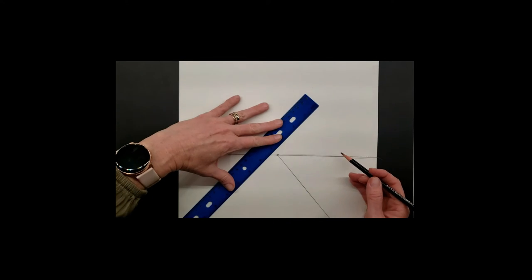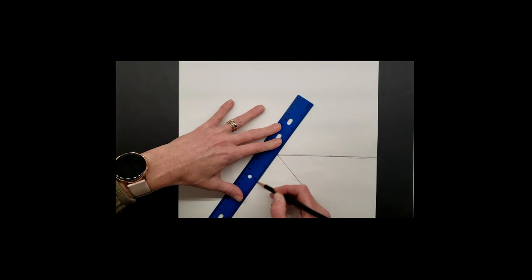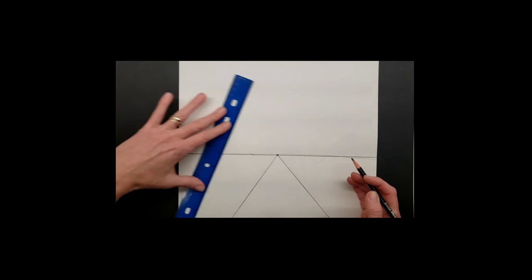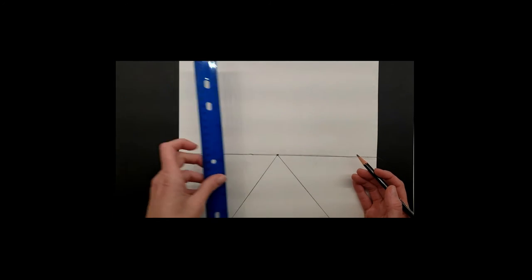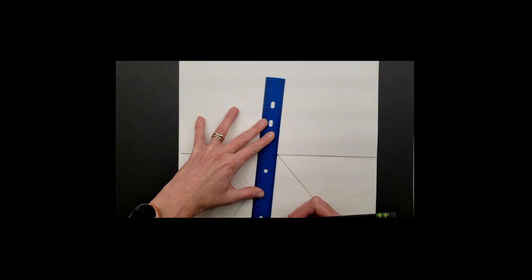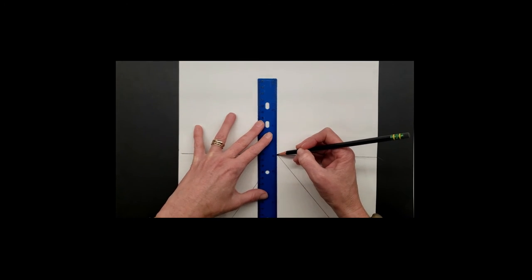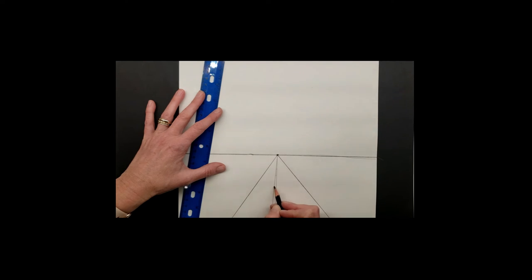So first we're going to draw a diagonal line from the vanishing point and then just switch your ruler over to the other side, another diagonal line, both of these lines meeting at the vanishing point. Let's put a dotted line running down the center of this road. We're going to start by drawing a small triangle down the center of our road. So not as wide as our road, but down the center. Draw this kind of lightly because you're going to be erasing this in just a moment.